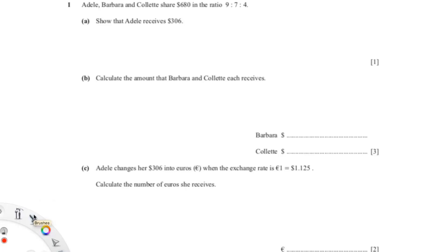This question reads: Adele, Barbara, and Colette share $680 in the ratio 9 to 7 to 4. The question is asking about Adele's share, and her ratio is 9. So to calculate Adele's share, we would do 9 over (9+7+4) times 680, because that's the total amount they share. When you plug this into your calculator, you should get